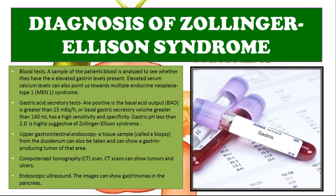The gastric pH can also be measured and is usually positive if it's less than 2, indicating an extremely acidic environment. Upper GI endoscopy can be done and will show signs of ulcers, bleeding, and erosions, and a biopsy can be taken to detect gastrinomas present in the duodenum. CT scans can show tumors of the pancreas and duodenum as well as ulcers in the stomach, and endoscopic ultrasound can provide images of gastrinomas occurring in the pancreas.